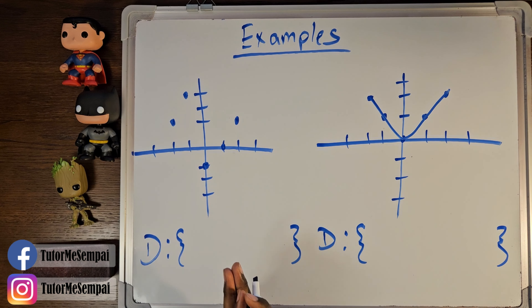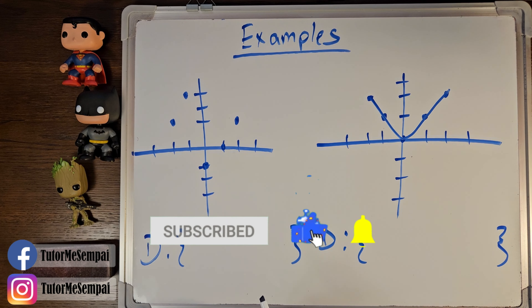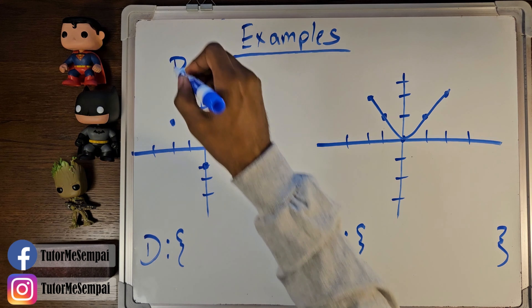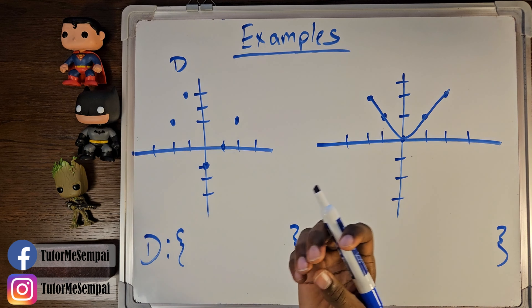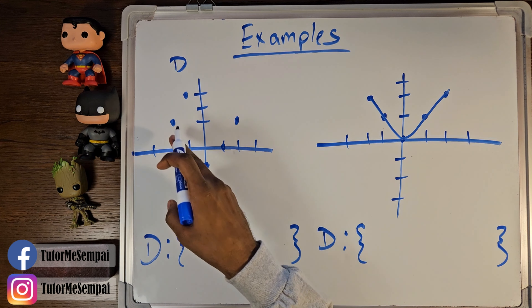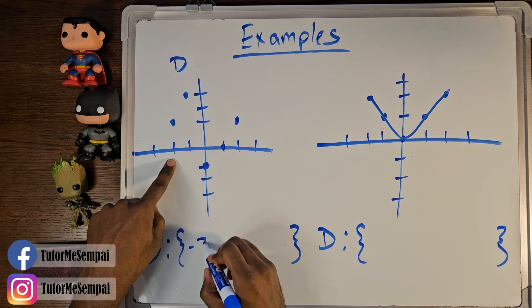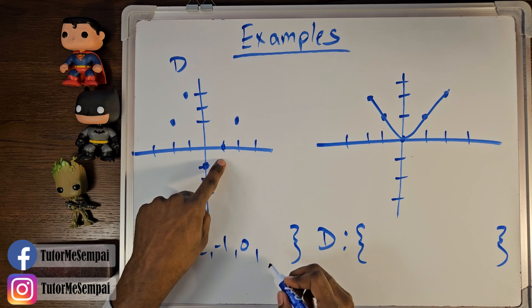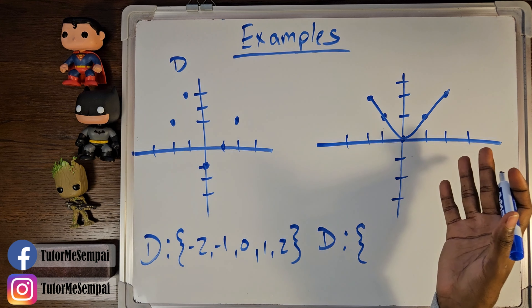Looking at our first example, is this going to be discrete or continuous? Well, this is going to be discrete, because none of these points are connected. So what's going to be our domain now? Looking at these points, we see that we have an x value at negative two, an x value at negative one, one at zero, one at one, and one at two again.